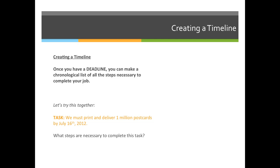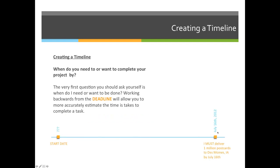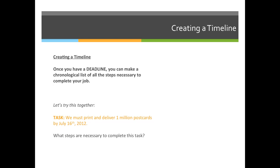Once you have a deadline, you can make a chronological list of all the steps necessary to complete your job. I want to point out that your quiz this week is to do basically the same thing we're about to do, but choose something in your everyday life. Let's try this together: we're going to print and deliver 1 million postcards by July 16, 2012. We must identify the deadline — July 16 — and note that we must deliver 1 million postcards to Des Moines, Iowa.